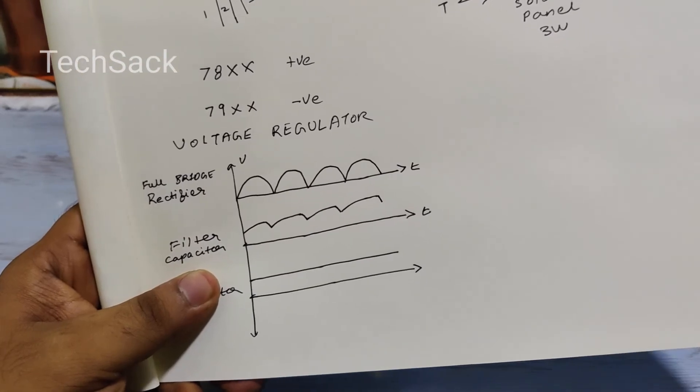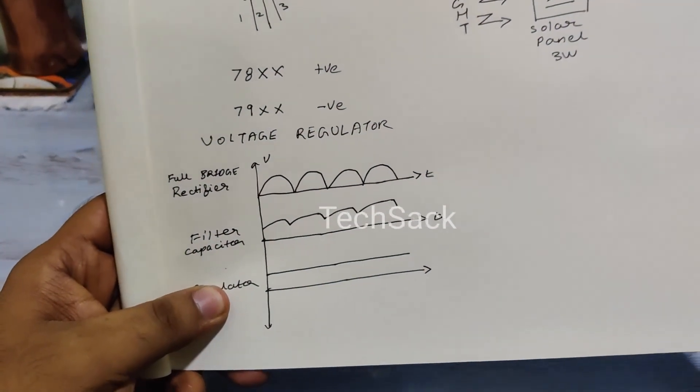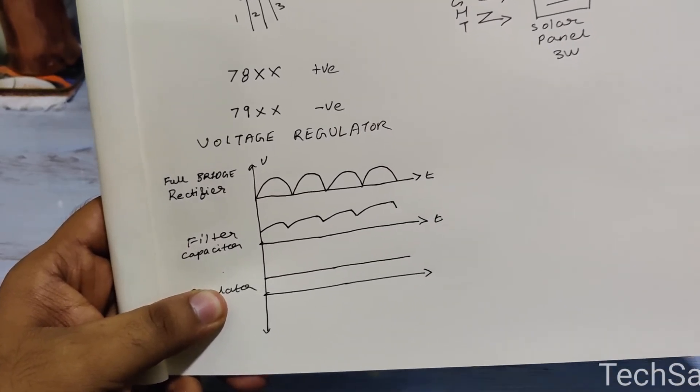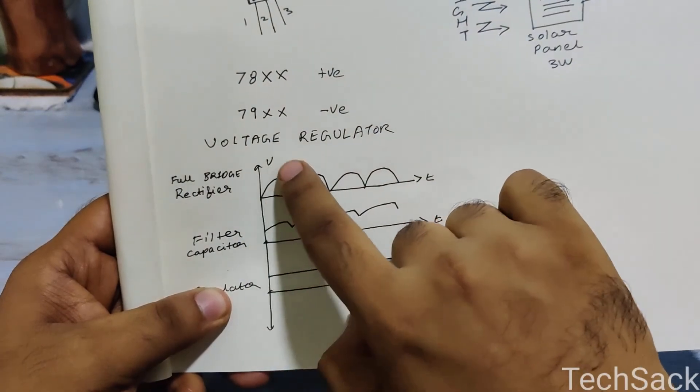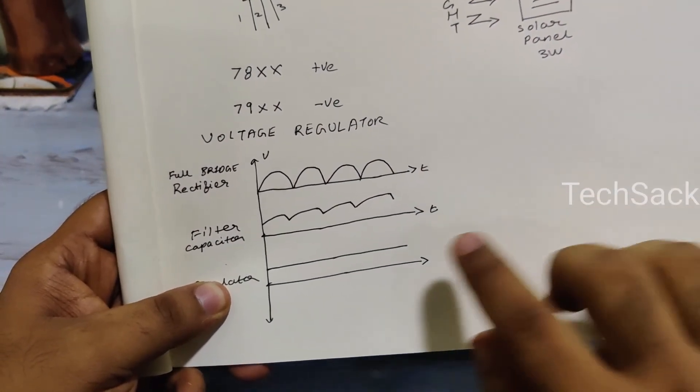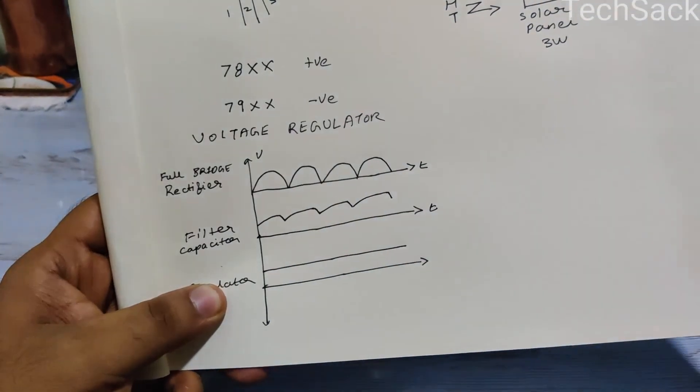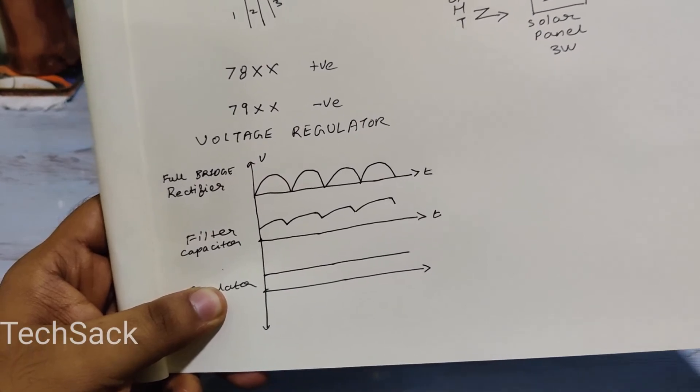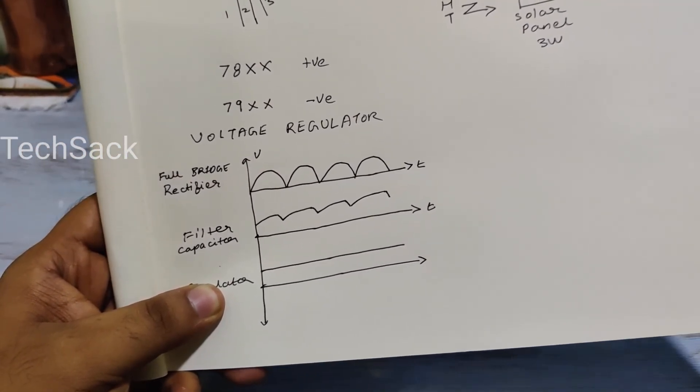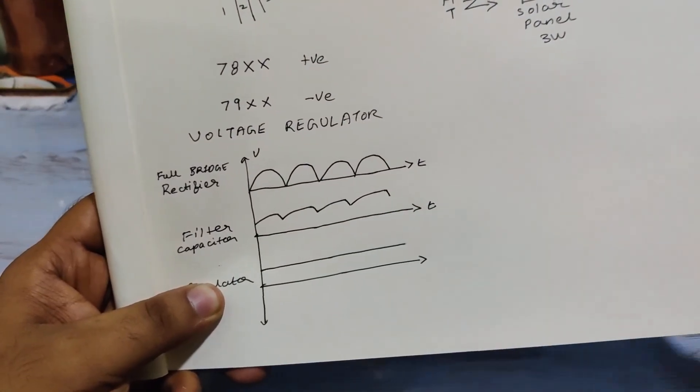Just to understand what a voltage regulator is, the output of a full bridge rectifier or any rectifier is not always DC, in fact it's never DC. It's always ripple peak DC. When we use a filter, these ripples in the DC output would be made or brought to a certain level where it can look like a constant DC voltage. With the frequency of the input lines being 50 hertz or 60 hertz, this doesn't impact most of the applications.